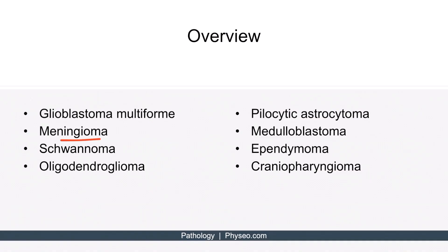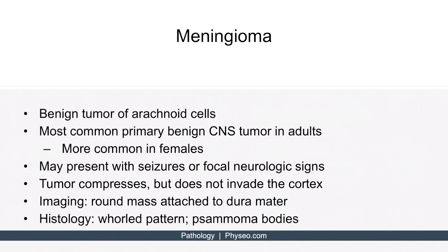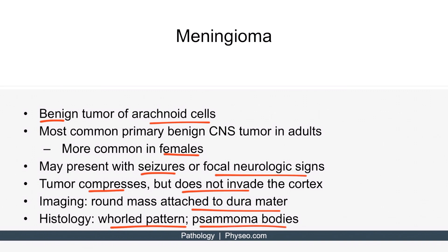Now let's discuss meningioma. This is a benign tumor of arachnoid cells. It's the most common primary benign CNS tumor in adults, especially in females. Patients may present with seizures or focal neurologic signs, depending on the area involved. This occurs because the tumor compresses but does not invade the cortex, putting pressure on vital structures. On imaging, a round mass attached to the dura mater can be found. A whorled pattern along with psammoma bodies can also be observed on histology.